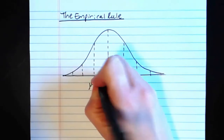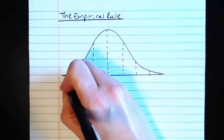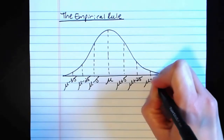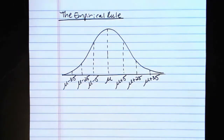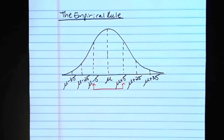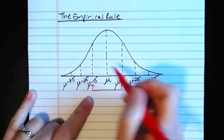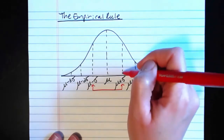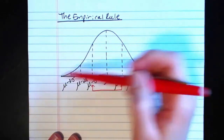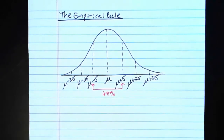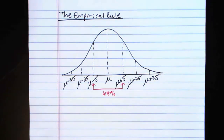So this would be mu minus sigma, mu minus 2 sigma, and mu minus 3 sigma on the left-hand side, and mu plus sigma, mu plus 2 sigma, and mu plus 3 sigma on the right-hand side. What the empirical rule says is that if we look at how much data is between mu minus sigma and mu plus sigma — within just one standard deviation on either side of the mean — that's a big chunk. Specifically, it is approximately 68% that fall within one standard deviation on either side of the mean.